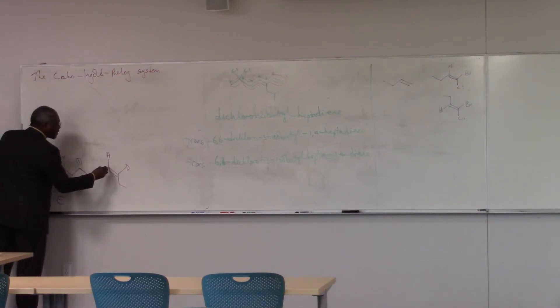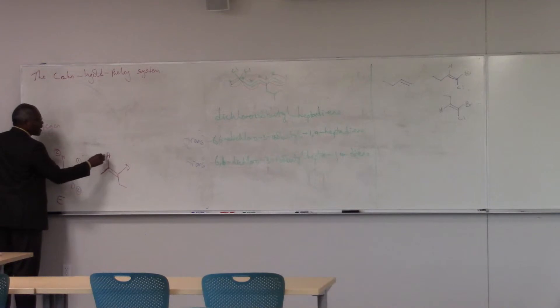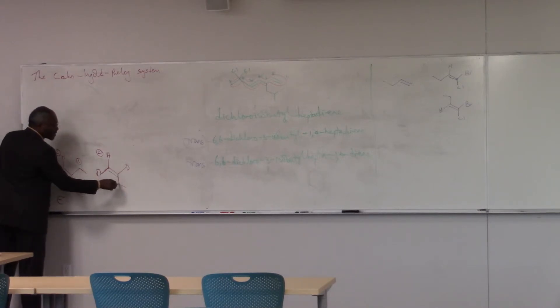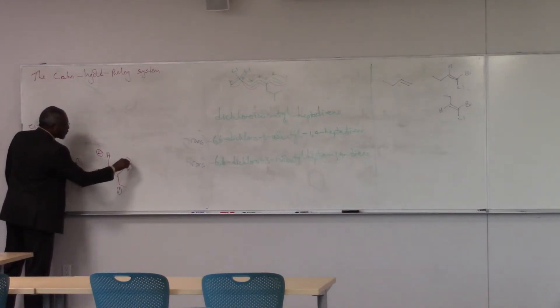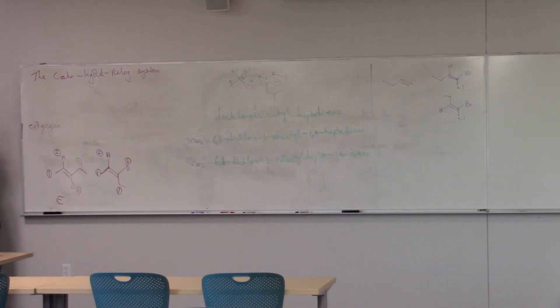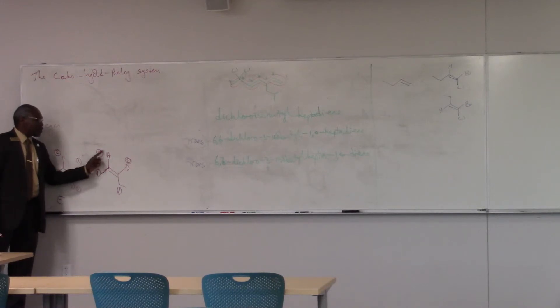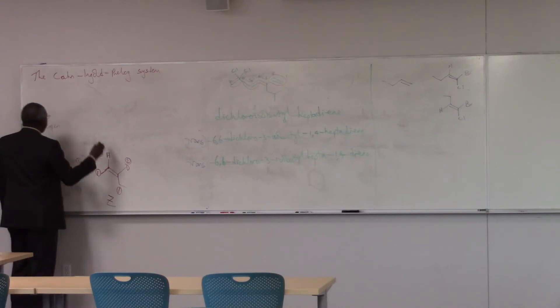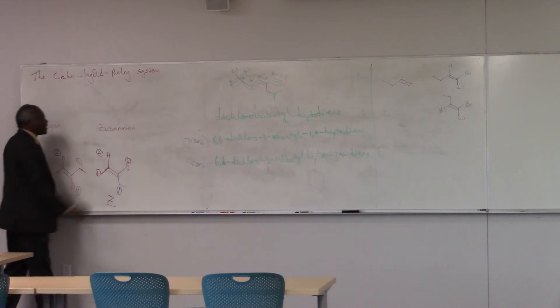In this compound, my group, here's my vinylic carbon. It's got carbon, atomic number 6, H atomic number 1. This is first priority. This is second priority. Atomic number 6, atomic number 1. This is first priority. This is second priority. Here, my groups of like priority, 1 and 1, 2 and 2, are on the same side of the double bond. This is called the Z isomer, from the German word zusammen, which means together.